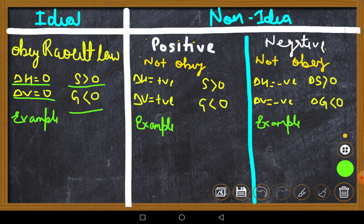...you should know that delta H will be positive and delta G will be less than zero. Now, if positive is a non-ideal solution, then delta H will be positive and delta V will be positive, and delta G will be negative.